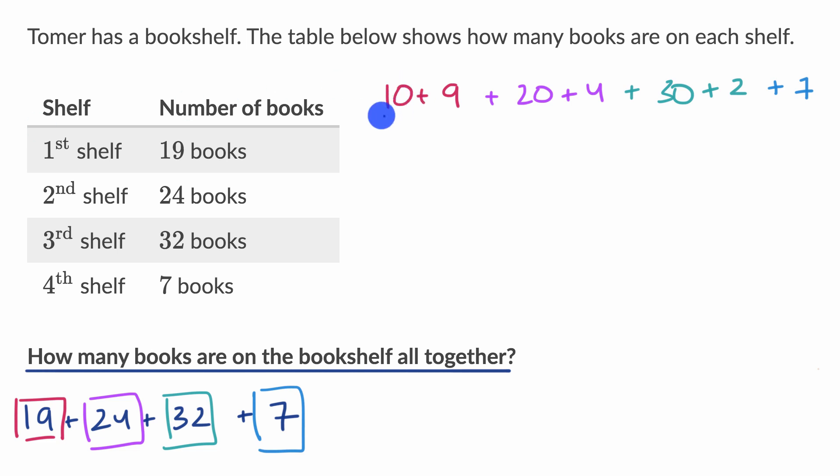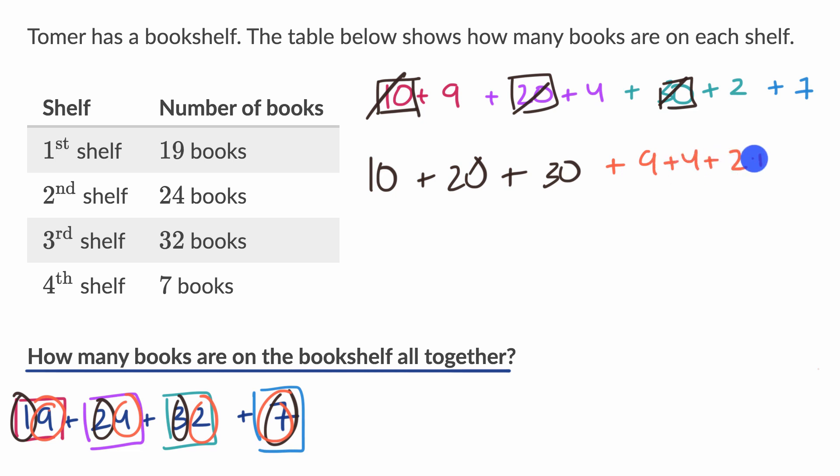And now what I can do is I can take each of these that came from our tens places right over here. So I would have 10 plus 20. I'm just crossing it out so I can keep track of things. Plus 30. So I did these three. And then I would have all of the ones or the things that I got from the ones place. So it's the nine, the four, the two, and the seven. So plus nine, plus four, plus two, plus seven.